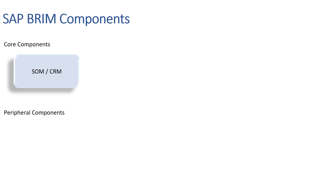Subscription Order Management, or SOM, is basically SAP CRM — SAP Customer Relationship Management module. SAP CRM handles subscription life cycles with S/4HANA. As we are aware, SAP CRM is now not a separate system but rather is a part of the same S/4HANA box, so the same is applicable for SOM as well.